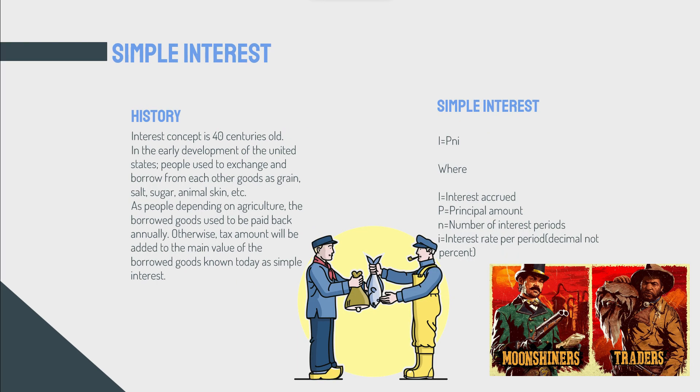Now let's start with simple interest. As a history, the interest concept is 40 centuries old. Back in time, in the early development of the United States, people used to exchange stuff. They would take maybe a steak and give him back 10 eggs. Maybe you take a bull skin and give him back something else. Maybe you grow in some kind of crop in your field and you give him back.